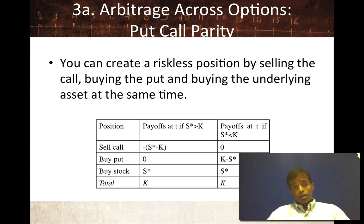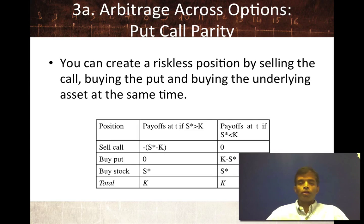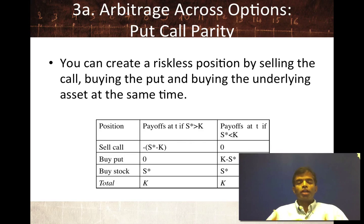The third type of arbitrage you can get with options is arbitrage across options. If you have multiple options on the same underlying asset, there are some parity relationships that have to hold, and if they're violated, you might be able to take advantage of them.